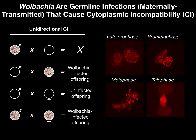Cytologically, during the first mitosis of a fertilized egg undergoing cytoplasmic incompatibility, the major change observed is that the male chromatin doesn't condense properly while the female chromatin does. In metaphase, the paternal chromatin is diffuse and hasn't condensed. This leads to paternal chromatin bridging during telophase — the two cells are trying to divide, but the paternal chromatin gets shredded in the process, leading to a dead embryo.